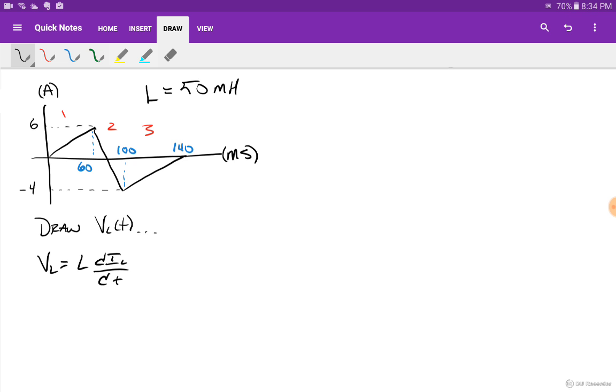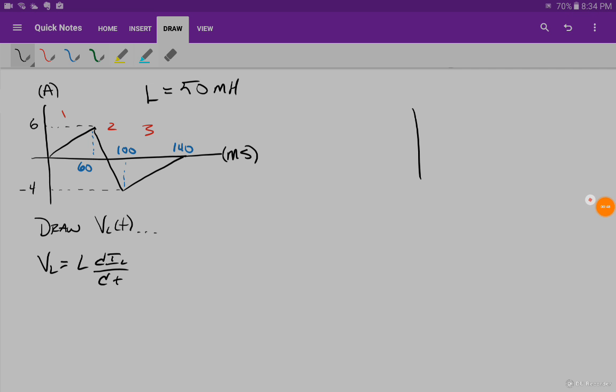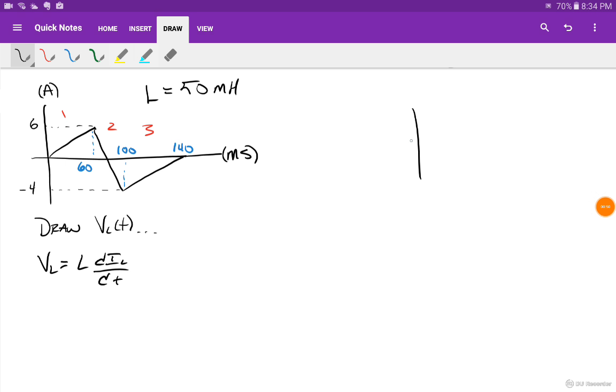Let me put up a voltage graph. If that's current, then this will be voltage. If this is milliseconds, I want to keep it consistent with milliseconds. And if this is 60 seconds, that's going to be segment one. So I got 60, 100, and 140. 60, 100 here, and 140.